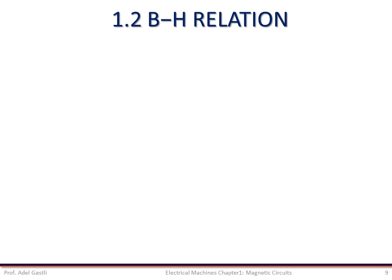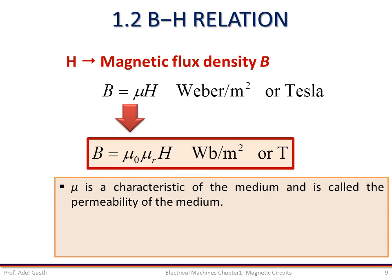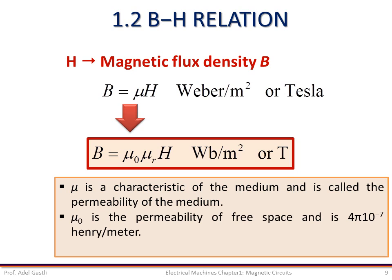Now we determine the relationship between the magnetic flux density B and the magnetic field intensity H. The magnetic field intensity H produces a magnetic flux density B everywhere it exists. These two quantities are related by the equation B equals mu times H, where mu equals mu_0 times mu_r. Here mu is the permeability of the medium: mu_0 is the permeability of free space, equal to 4π × 10⁻⁷ H/m, and mu_r is the relative permeability of the medium. Note that mu_0 is constant, while mu_r depends on the medium and is not constant, as we will see when we study the magnetization curve or BH curve in part 2.